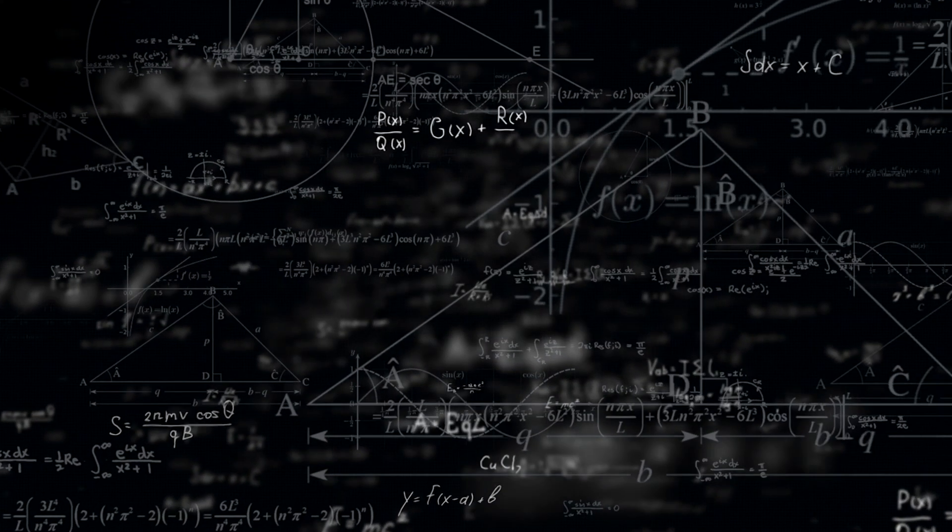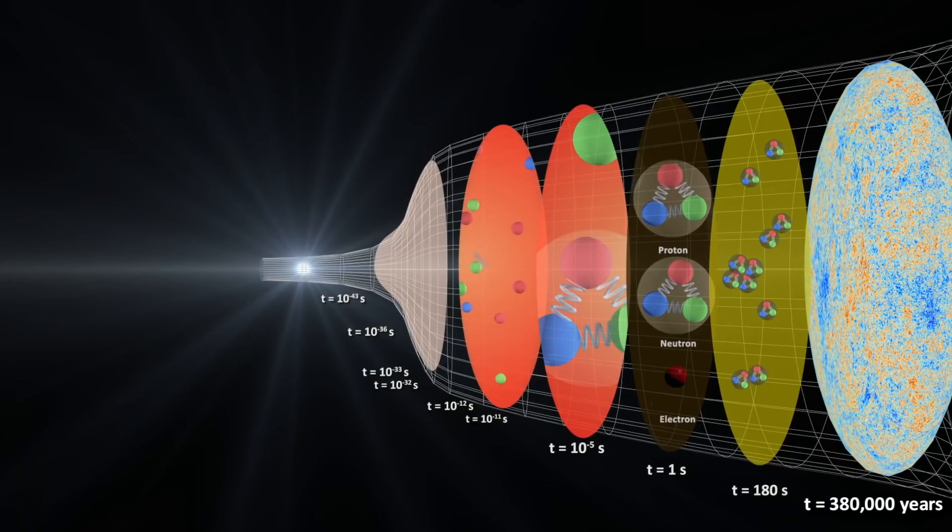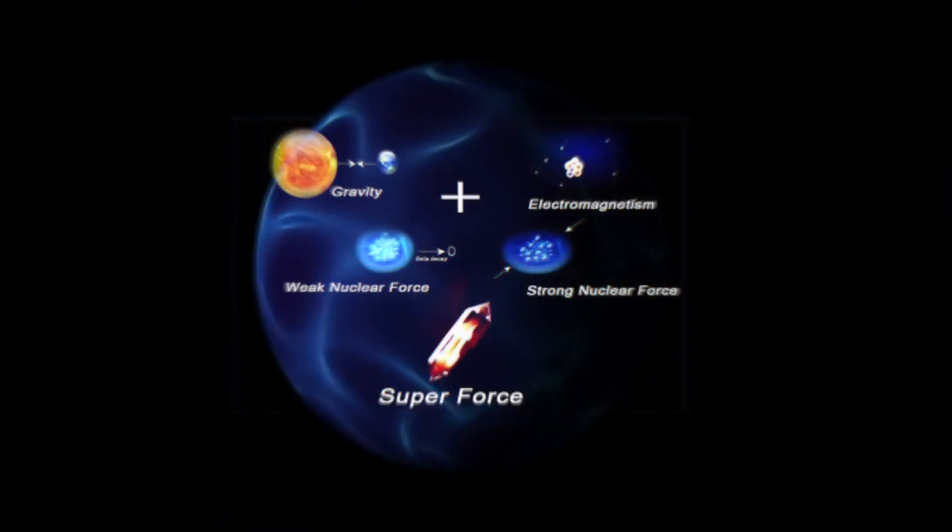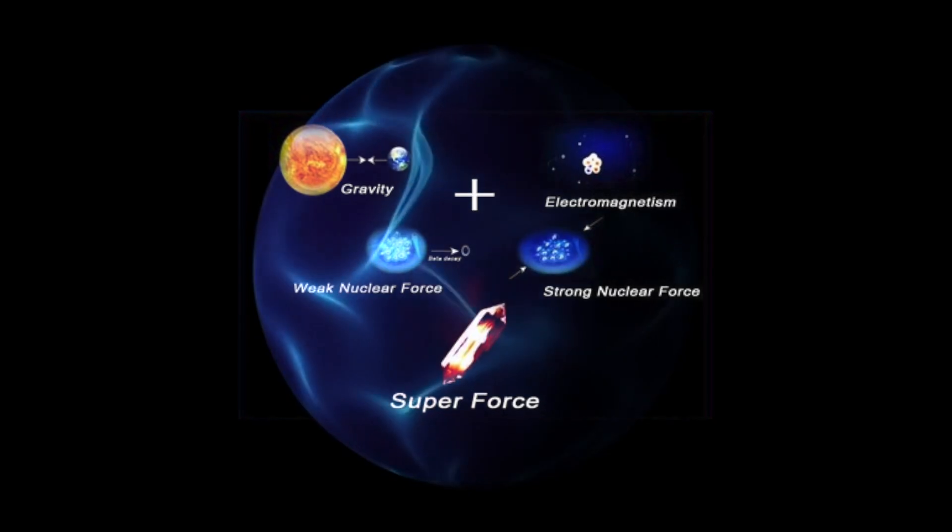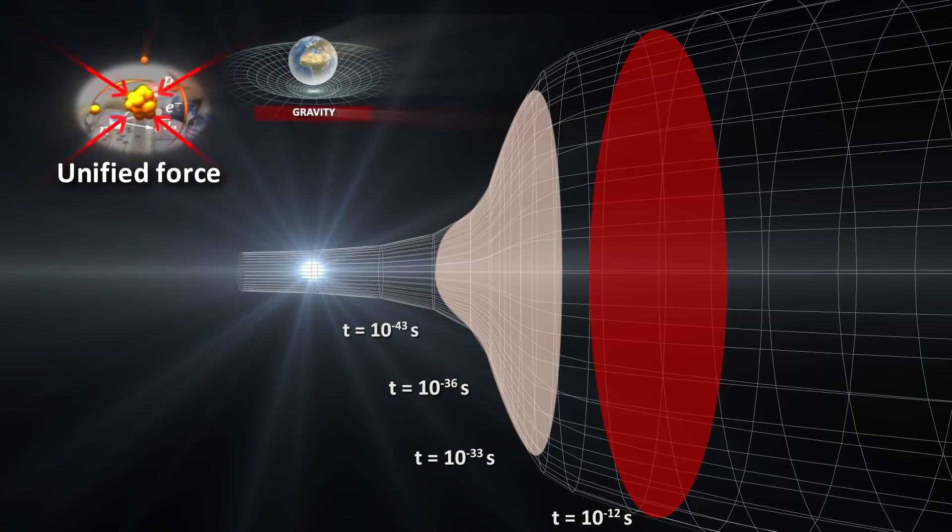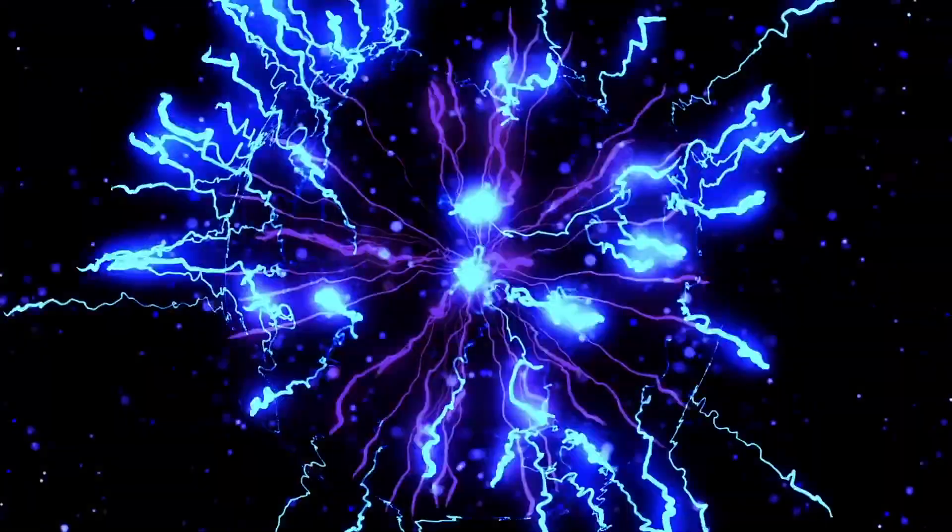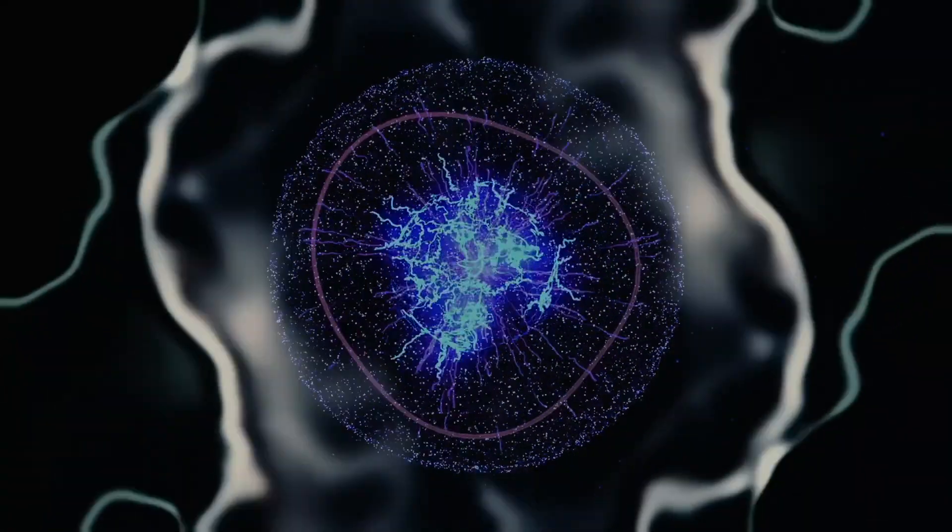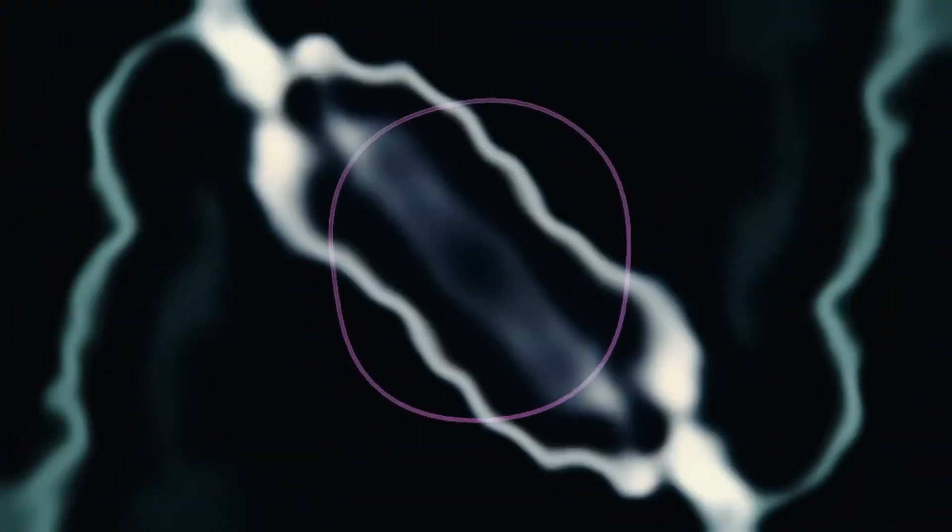These laws break down when trying to describe the universe when it was very young. During the very first moments of the universe, all the fundamental forces were fused into a single force working in the universe until the strong force first separated from the others. But before then, there was no clear picture to what reality was like.